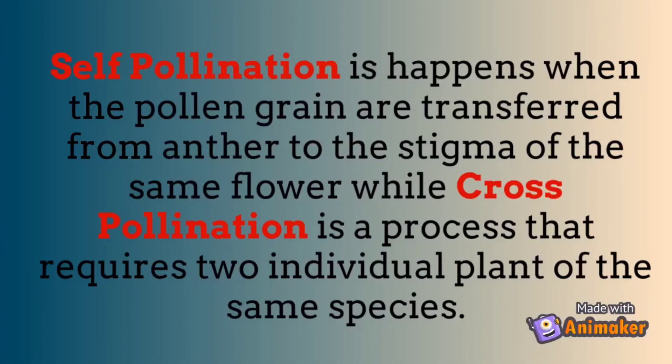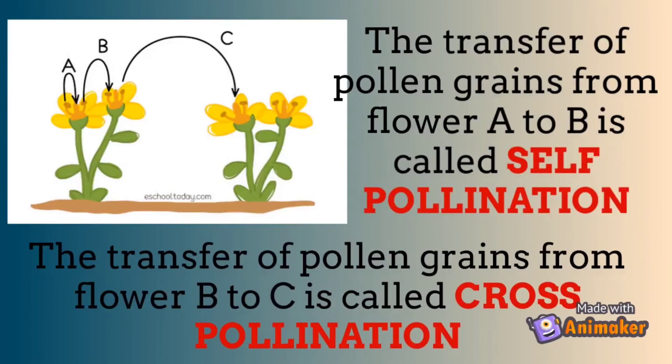Self-pollination happens when the pollen grains are transferred from the anther to the stigma of the same flower, while cross-pollination is a process that requires two individual plants of the same species. The transfer of pollen grains from flower A to itself is called self-pollination. The transfer of pollen grains from flower B to flower C is called cross-pollination.